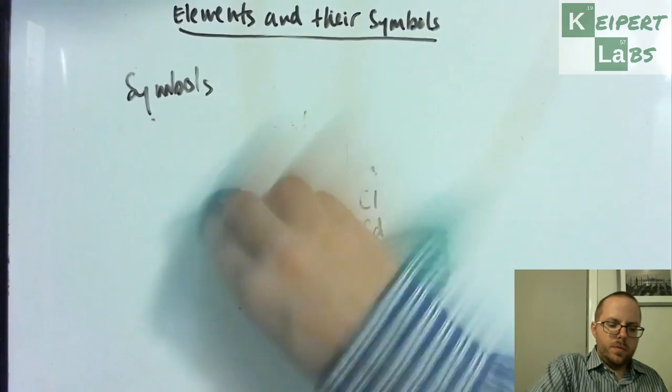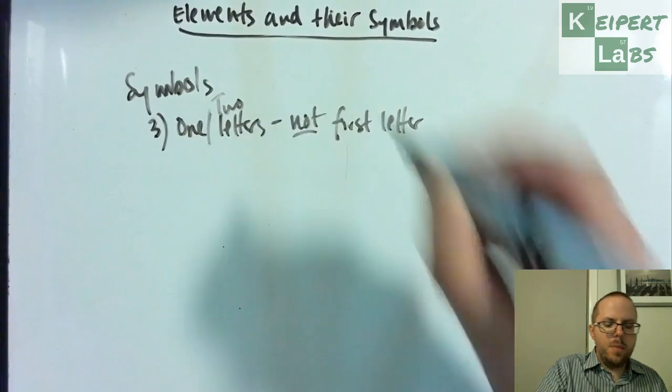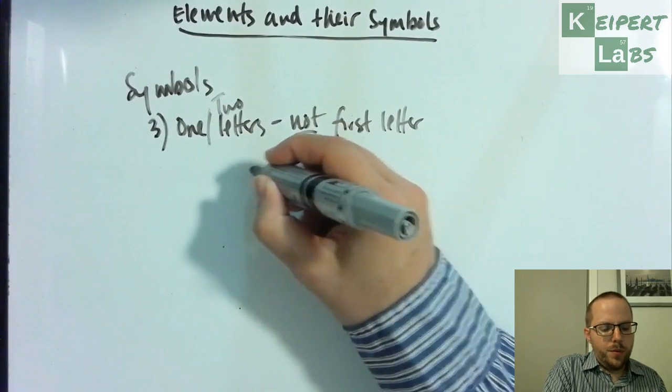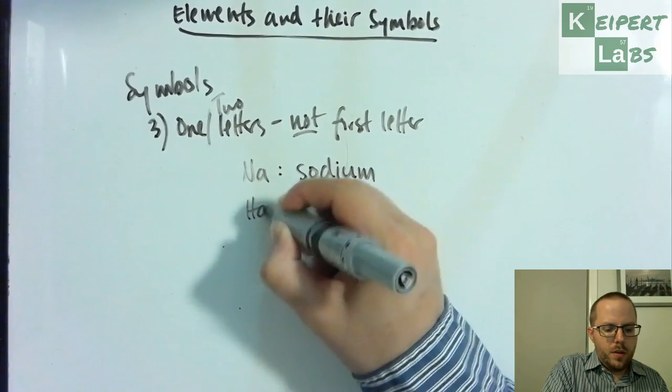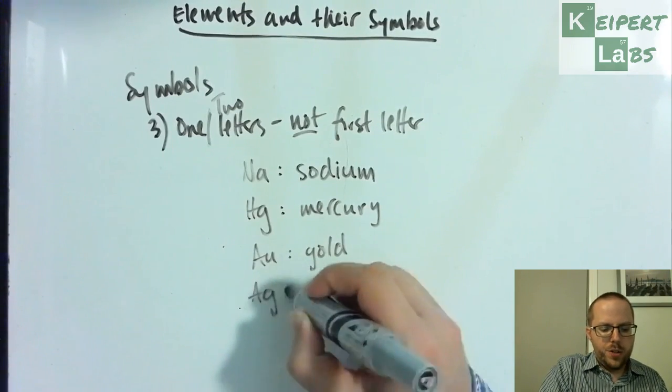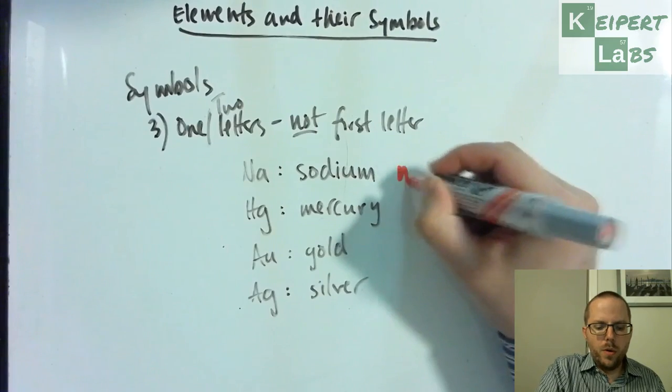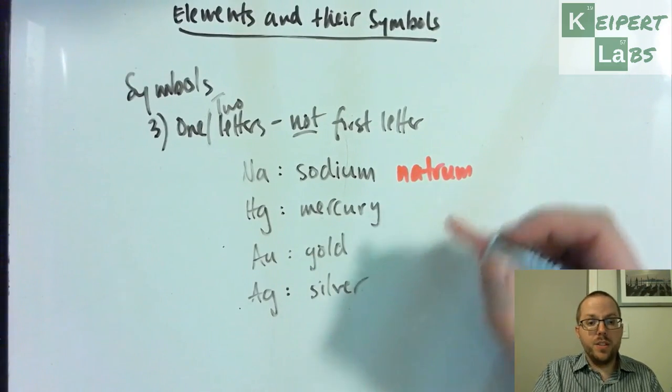We also come to ones that are one or two letters but they don't seem to come from the name at all. For example, Na is for sodium, Hg for mercury, Au for gold, Ag for silver. The reason for this is that in the past these elements didn't have these names - they were given symbols based on their original names. Sodium is Na because it used to be called natrium or comes from natron, a type of salt that the Egyptians used to preserve mummies.